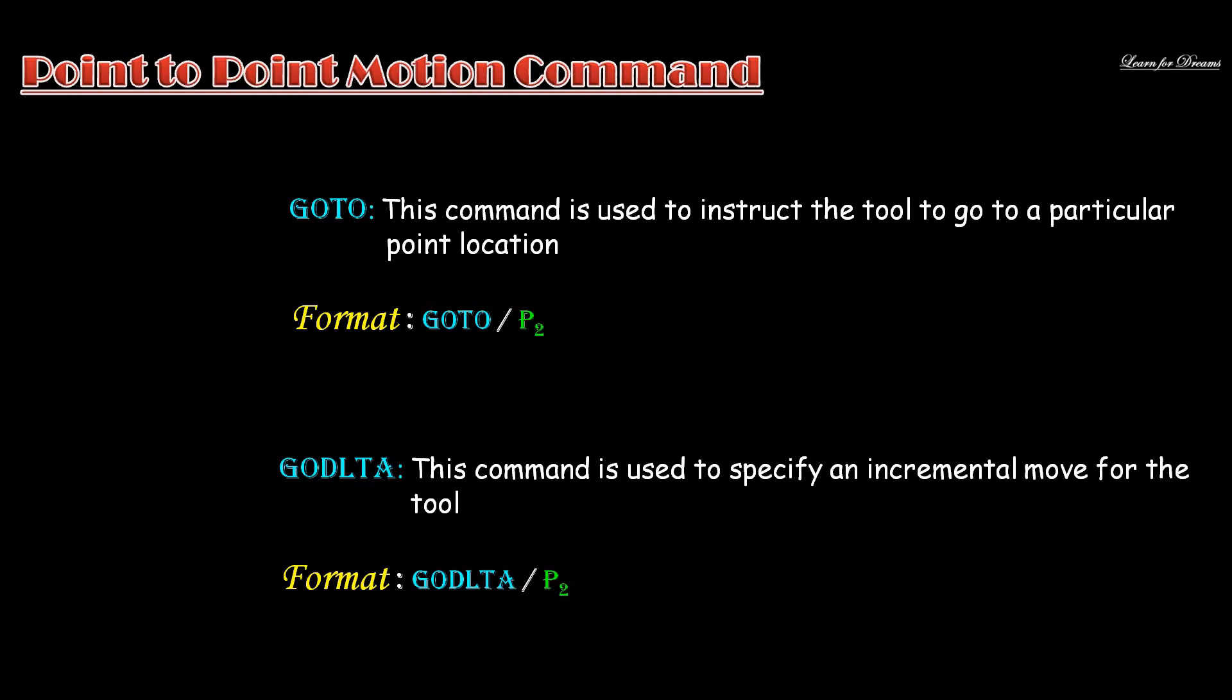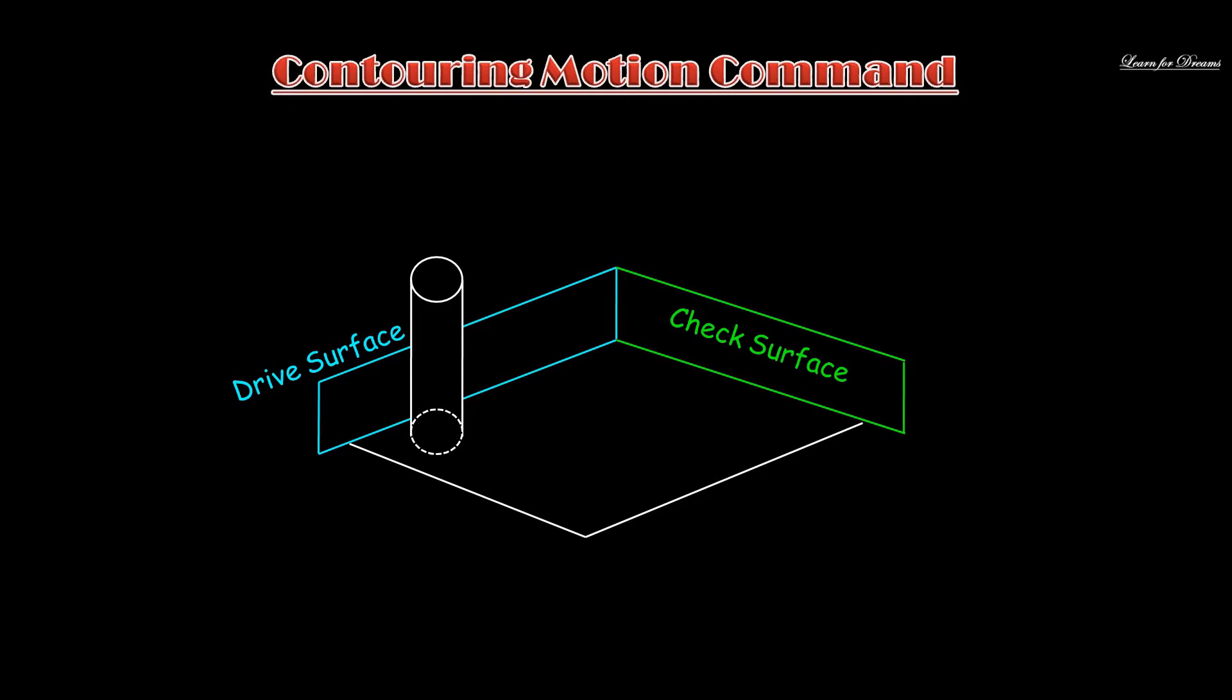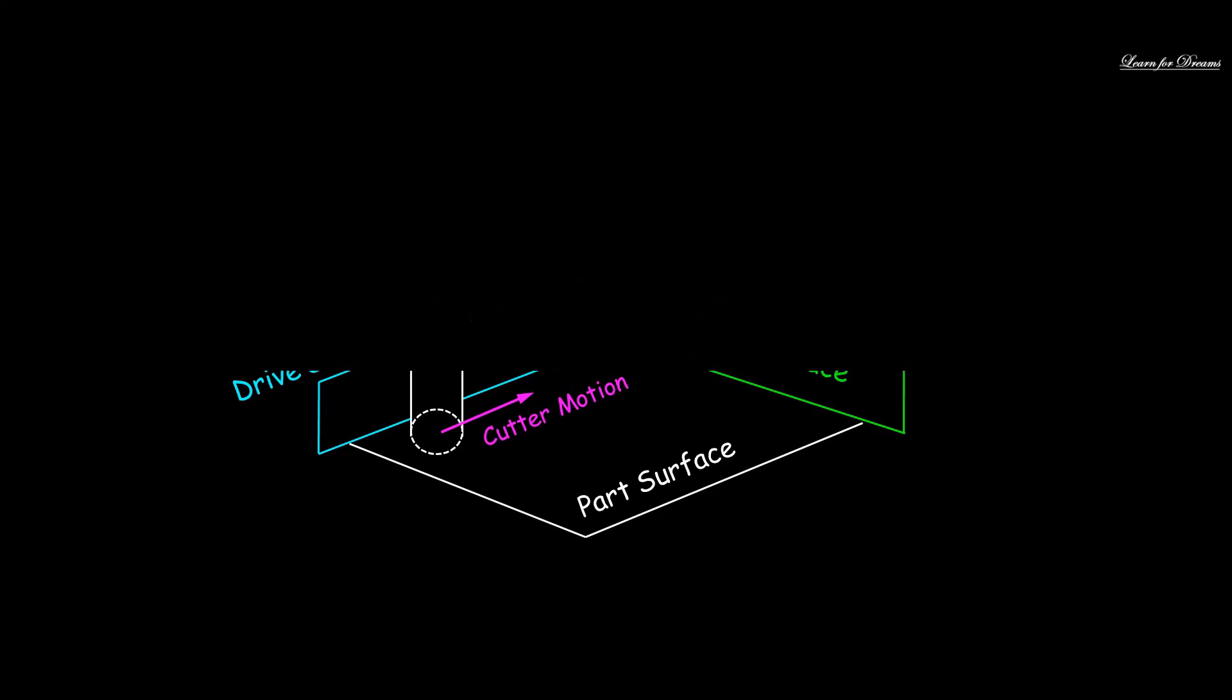Then the last type is contouring motion command. There are three surfaces taken into consideration for the contouring. They are: drive surface - this surface guides the side of the cutter; check surface - this surface stops the tool movement in its current direction; and the part surface - this surface may or may not be an actual surface of the workpiece, but it is the surface on which the bottom of the cutter rides.